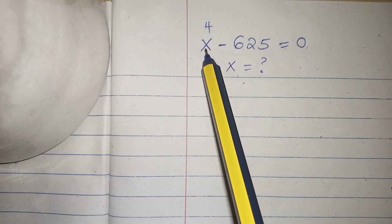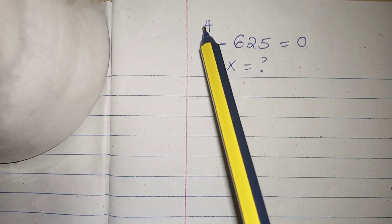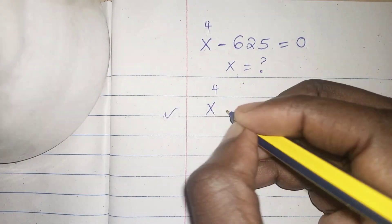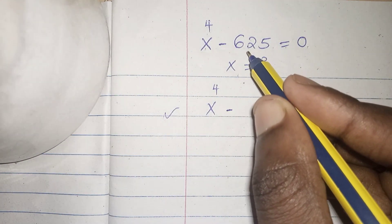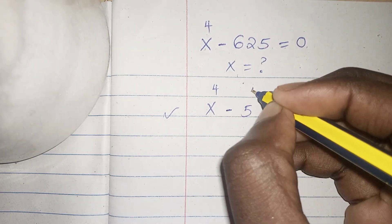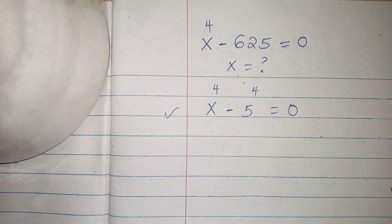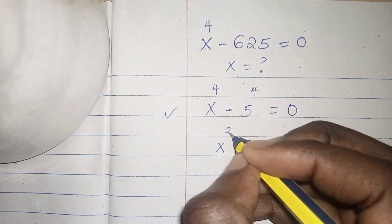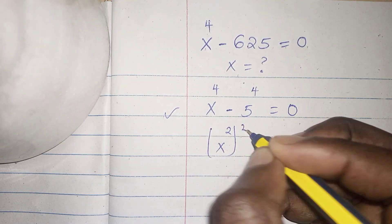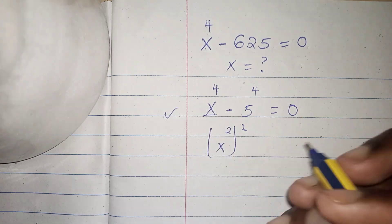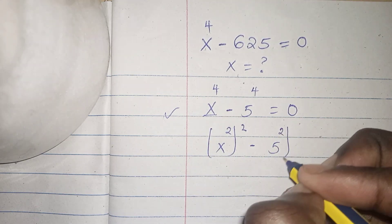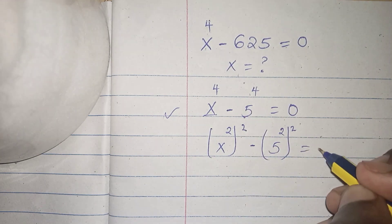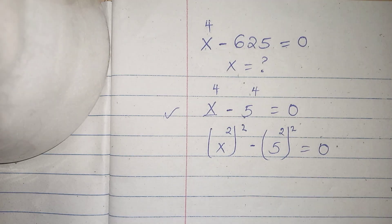What we're going to do is make x and 625 have the same power. So x to the power of 4 minus 625 can be written as x to the power of 4 minus 5 to the power of 4, which equals 0. We can write this in the form of a perfect square: x squared, all squared, minus 5 squared, all squared — which is the same as 5 to the power of 4 — equals 0.